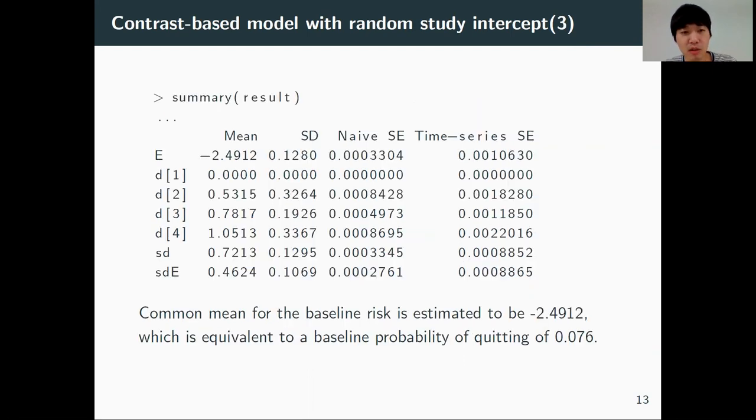This is a summary result for fitting this model. Now the common mean for the baseline risk is estimated to be minus 2.4912, which is equivalent to a baseline probability of quitting of 0.076.